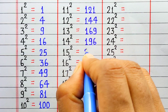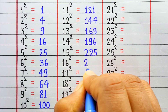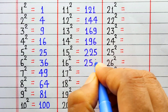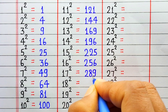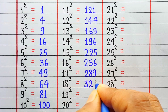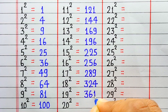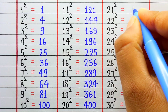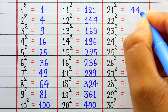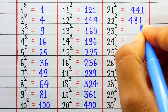Square of 15 is 225. Square of 16 is 256. Square of 17 is 289. Square of 18 is 324. Square of 19 is 361. Square of 20 is 400. Square of 21 is 441. Square of 22 is 484.